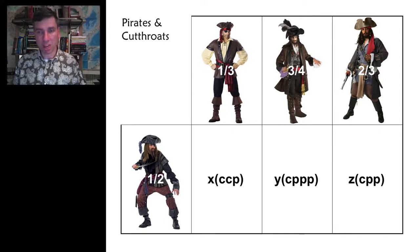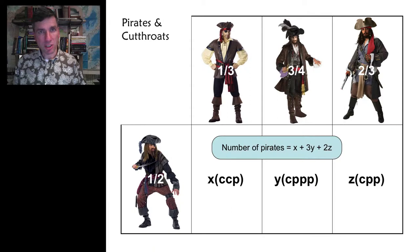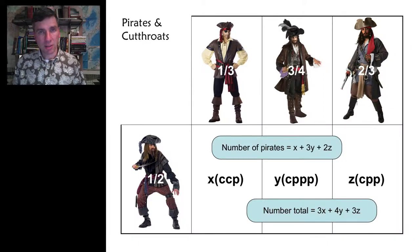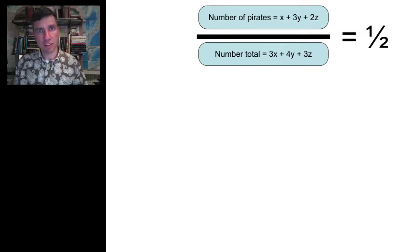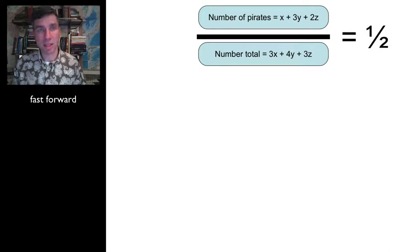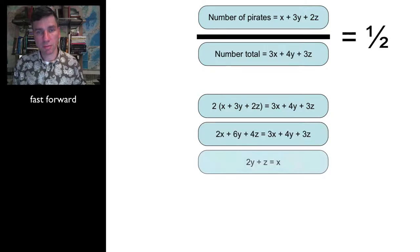How many pirates do we have total? We have X plus 3Y plus 2Z — that's our number of pirates. The total number of inmates is 3X plus 4Y plus 3Z. Now, taking the ratio of those two, it has to equal one-half. So: (X + 3Y + 2Z) / (3X + 4Y + 3Z) = 1/2. Multiplying out gives 2(X + 3Y + 2Z) = 3X + 4Y + 3Z, and grouping like terms we get 2Y + Z = X.